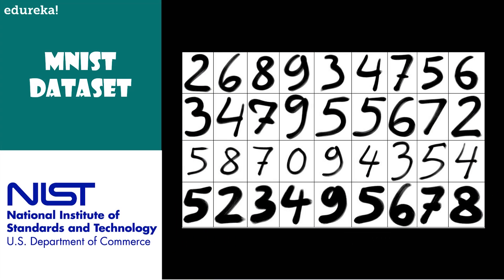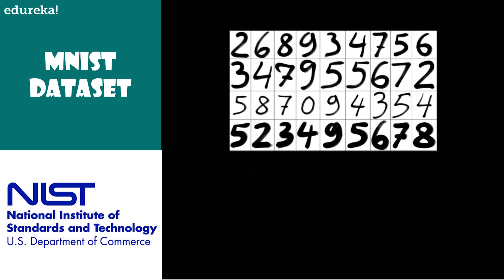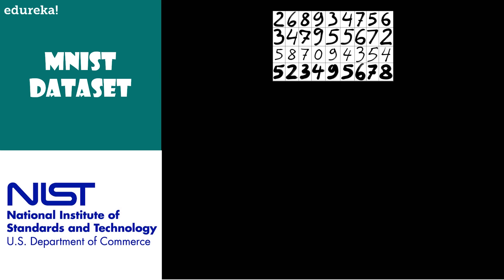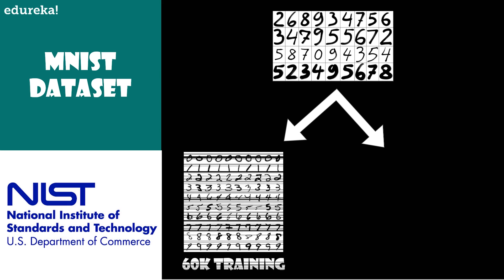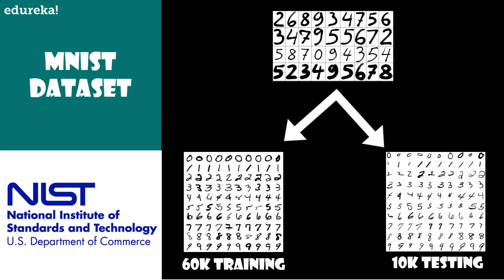Now we'll use the MNIST dataset here, which contains tens of thousands of scanned images of handwritten digits together with their correct classification. The MNIST name comes from the fact that it is a modified subset of two datasets collected by NIST, which is the United States National Institute of Standards and Technology. The data comes in two parts. The first part contains 60,000 images to be used as training data. These images are scanned handwritten samples from 250 people.